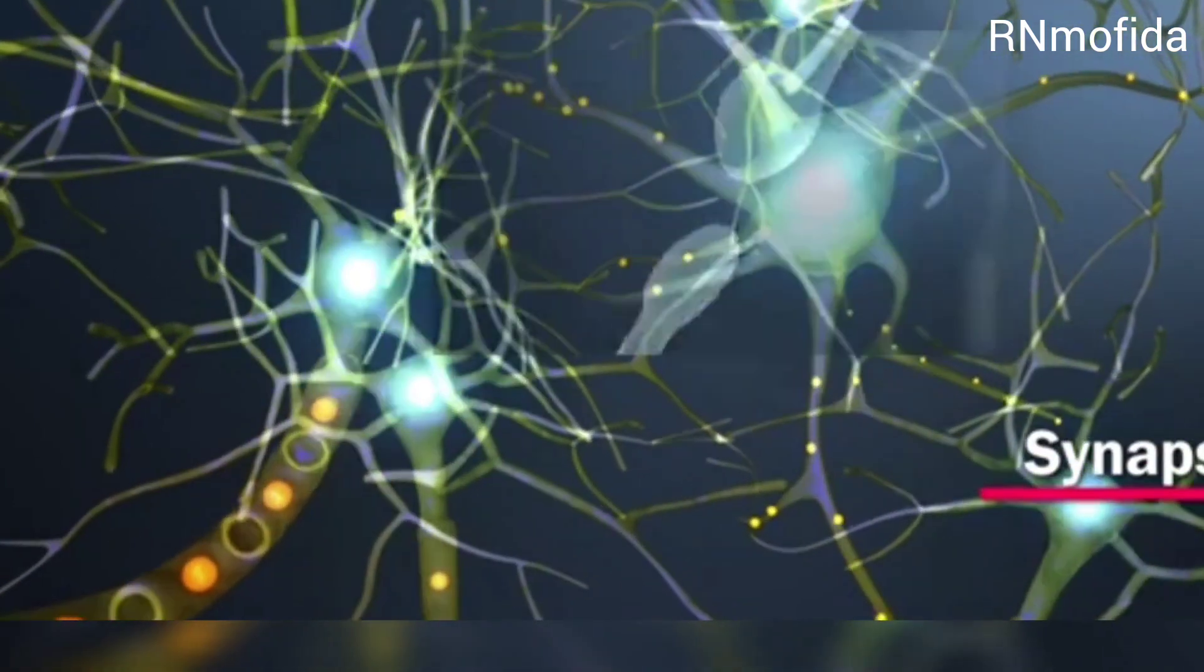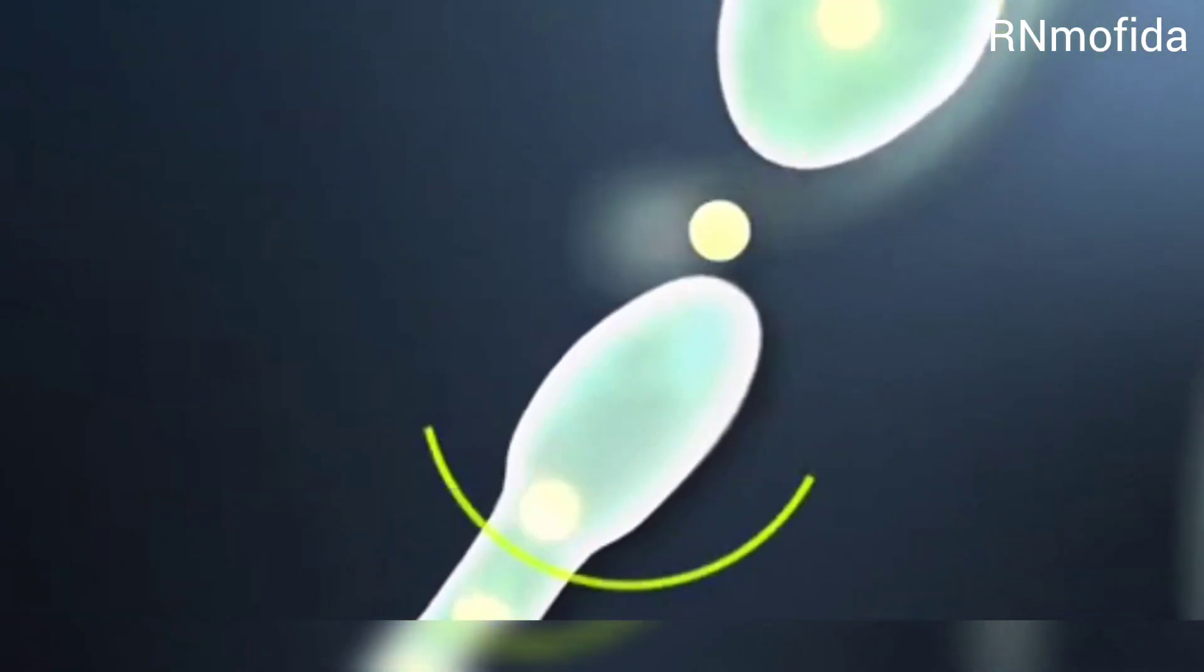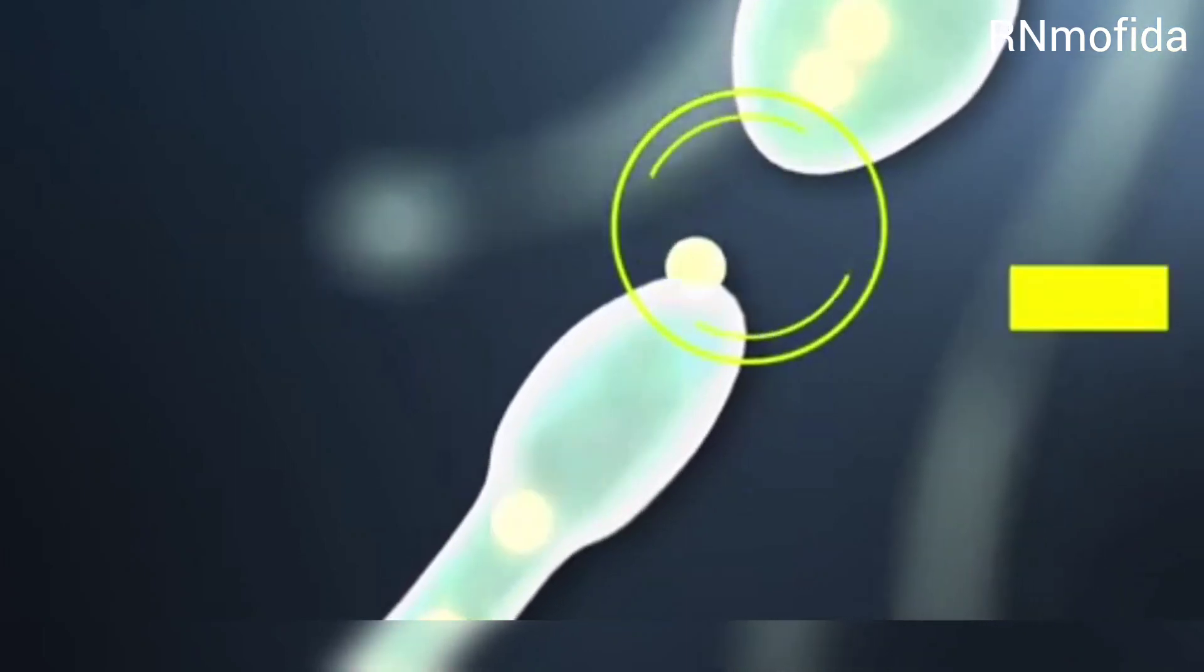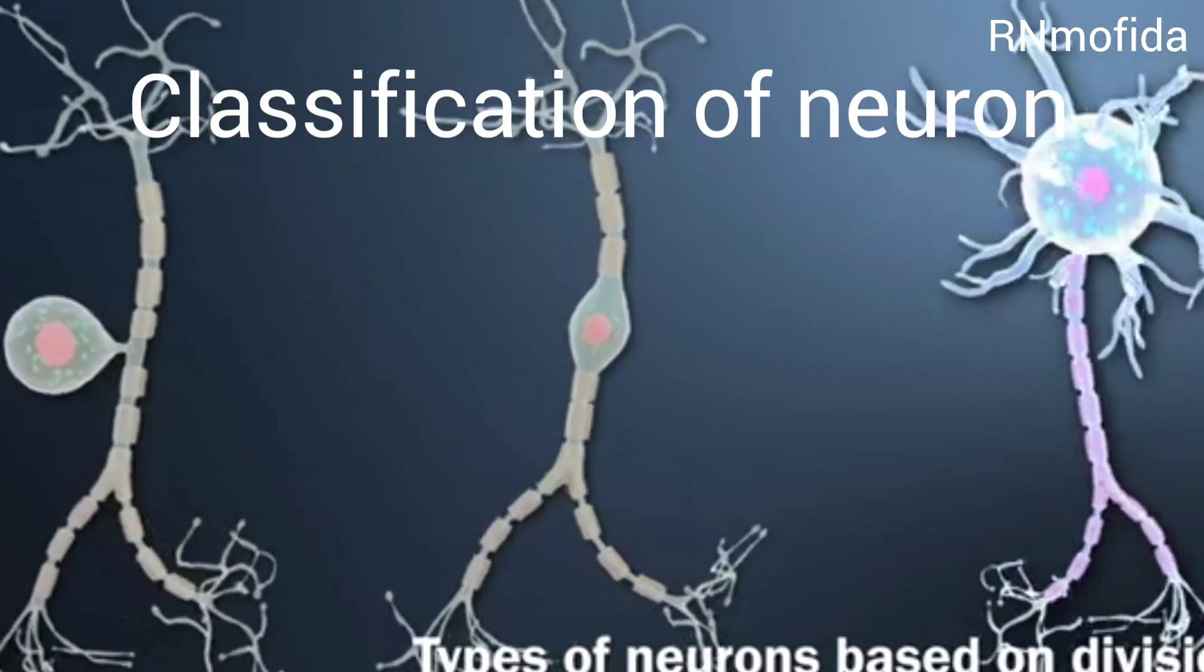The synapse is a certain gap between the axon terminal of the previous neuron and the dendrites of the next neuron.